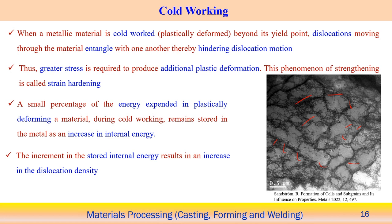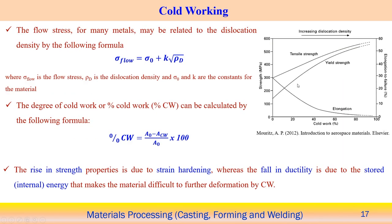The ease of dislocation movement represents the flow stress value during plastic deformation. Flow stress can be related to dislocation density using the formula: flow stress σ equals σ₀ plus k times the square root of ρ_d, where ρ_d indicates the dislocation density and σ₀ and k are material-dependent constants.